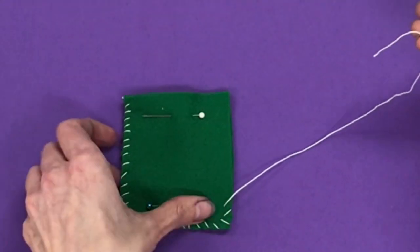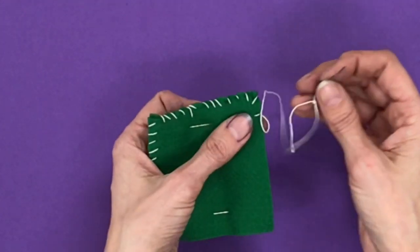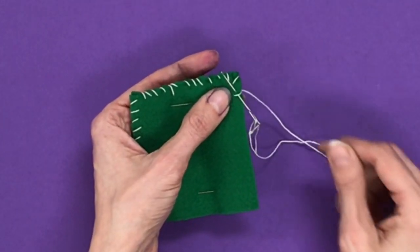When you come to a place where your thread is about as long as your hand, it's time to get new thread. But you can't just cut the thread and get new thread. It will come unraveled. You need to tie a knot.